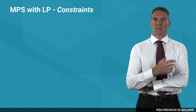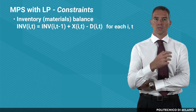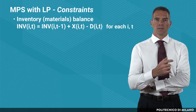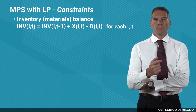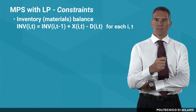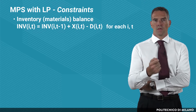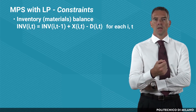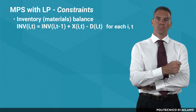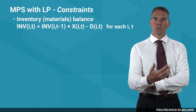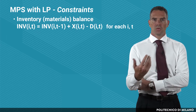As for the constraints, let's start with the inventory or materials balance constraint. This constraint connects production and inventory position with demand. It can be expressed for every item and every period as follows: the inventory at the end of a given period is equal to the inventory at the end of the previous period, plus the quantity we have been producing, diminished by the quantity of demand we have been serving.